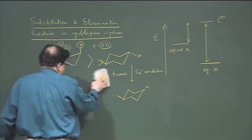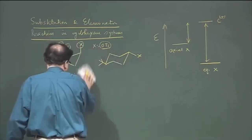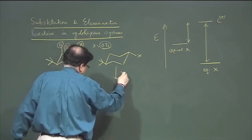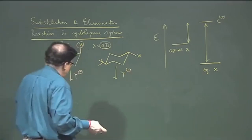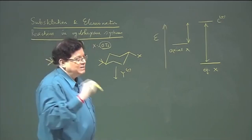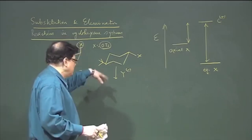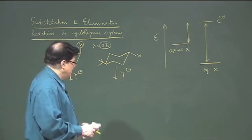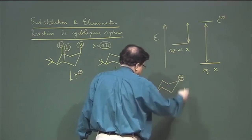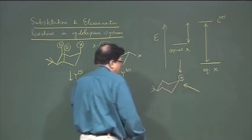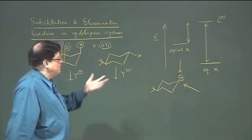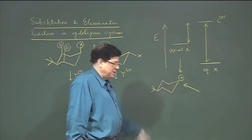Under SN2 conditions, a nucleophile Y⁻ is added. In SN1, whatever nucleophile you add, the second step is very fast, so the nucleophile can attack from both sides, forming both axial and equatorial products. The equatorial product may be slightly more favored, but in theory there should not be any selectivity in this attack under SN1 conditions.